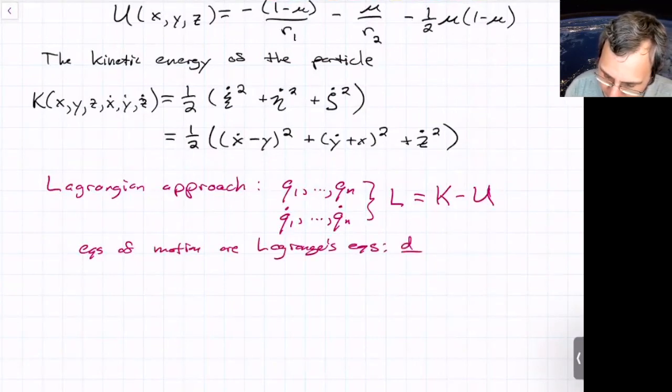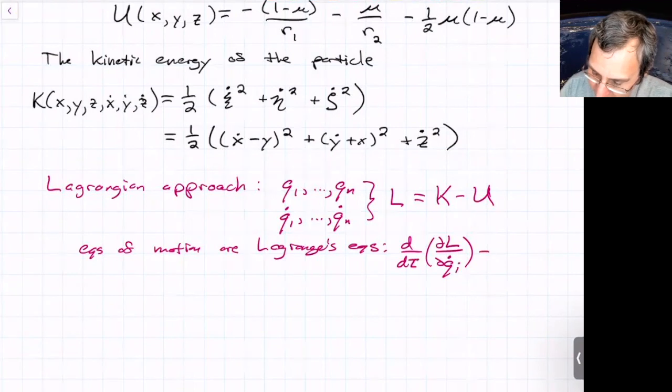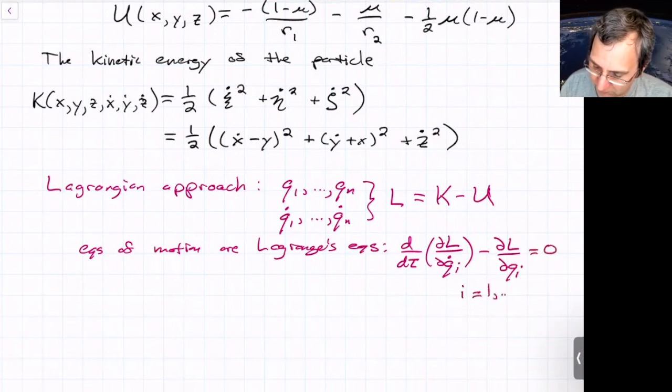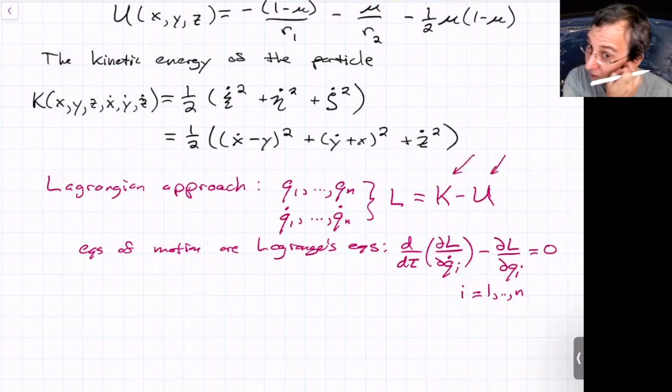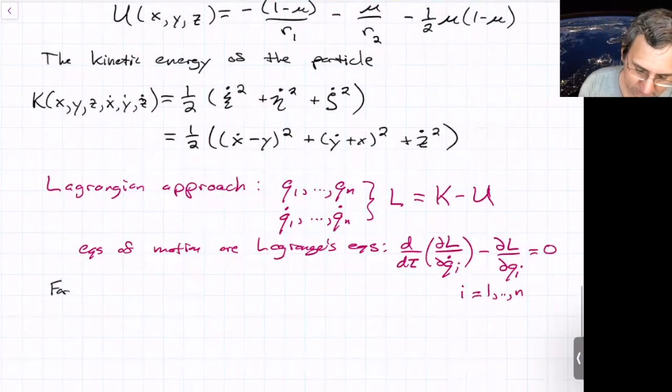And Lagrange's equations are you take the total derivative of partial L partial qi dot. So that's that d by dt. Take the total derivative. I guess here we're doing tau as the time. And then this is minus partial L partial qi. And this is set equal to 0. You have one of these for each of the generalized coordinates. So the index i goes from 1 to n. The right hand side is 0 here because all of the forces are included in either the kinetic or potential energy terms. If we had things that were non-conservative, or if we had rocket thrust or solar sail, it would show up in the right hand side here as something called a generalized force.